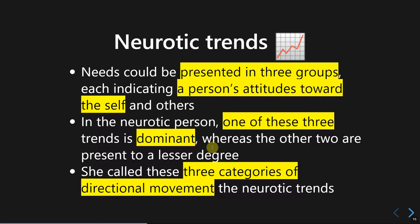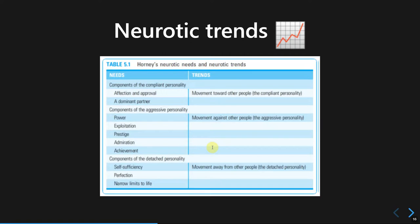Karen Horney called these three categories of directional movement of the neurotic trends. There are three categories that show completely different ways to cope with basic anxiety, and they shape the whole personality. The first one is the compliant personality, the first of the neurotic trends that shapes someone's personality. This personality is driven by the trend of movement toward other people — describing people who submit themselves, being submissive to others.